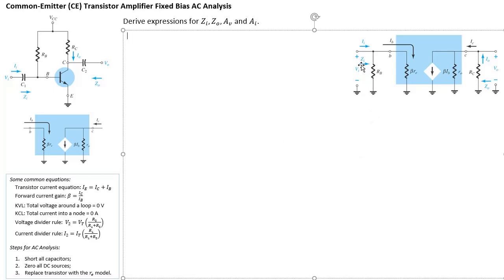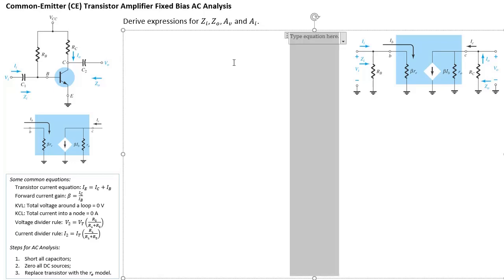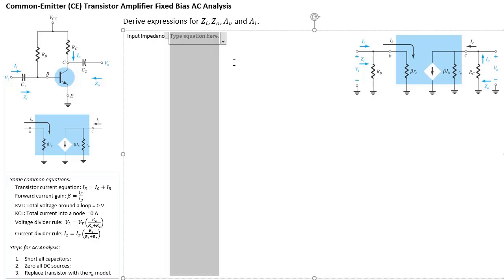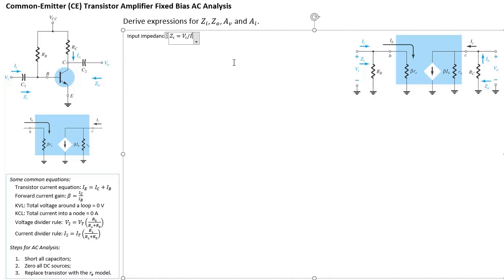ZI is defined as the input impedance as seen by VI. Using Ohm's law, R equals V over I, so ZI is going to be VI divided by II. That's the current going into the components to the right.